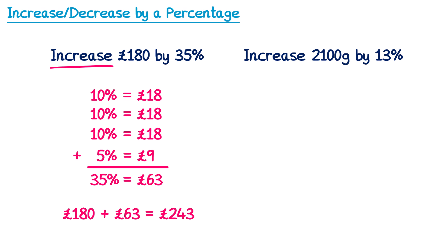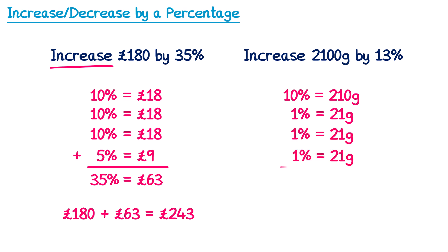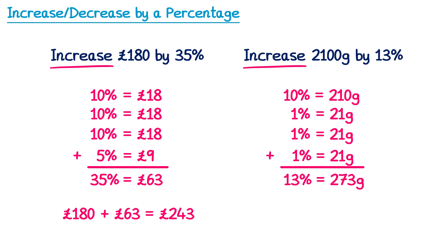Let's try one more. Increase 2100 grams by 13%. I'll start with 10%, which is 210. Then I'll find 1% by dividing 2100 by 100, which is 21. Taking three lots of 1% alongside the 10% gives 13% in total. Adding 210 + 21 + 21 + 21 = 273 grams. Because it says increase, we add this on: 2100 + 273 = 2373 grams.